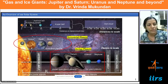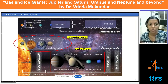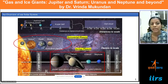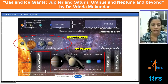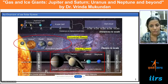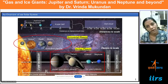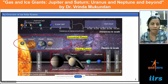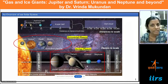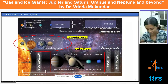The terrestrial planets include the inner planets Mercury, Venus, Earth, and Mars. And the Jovian planets include Jupiter, Saturn, Uranus, and Neptune. Apart from sizes, there are several parameters in which differences exist between these two groups of planets.